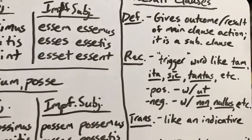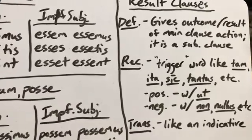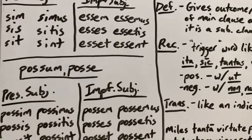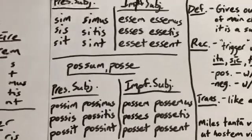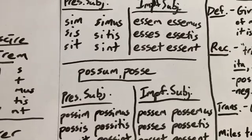Remember: for the positive result clause you're going to have 'ut'; for the negative, you'll also have 'ut' but you will also have 'non' or another negative word. As far as translation goes for this chapter, your translation is going to be in your book. We're going to look at the Sententiae Antiqui on pages 240 and 241. The ones we're going to do are: one, three, four, six, seven, and fourteen. Go ahead and pause this and work on those.